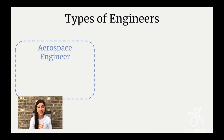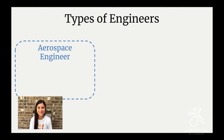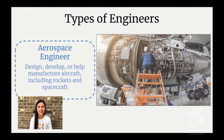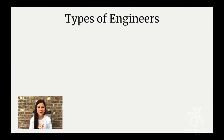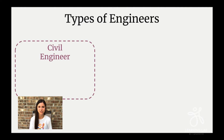So let's take a closer look at a few different kinds of engineers. One type of engineer is an aerospace engineer. Think about those words — aero and space. Does that give you a clue? An aerospace engineer designs, develops, and helps to manufacture different types of aircraft, like rockets.